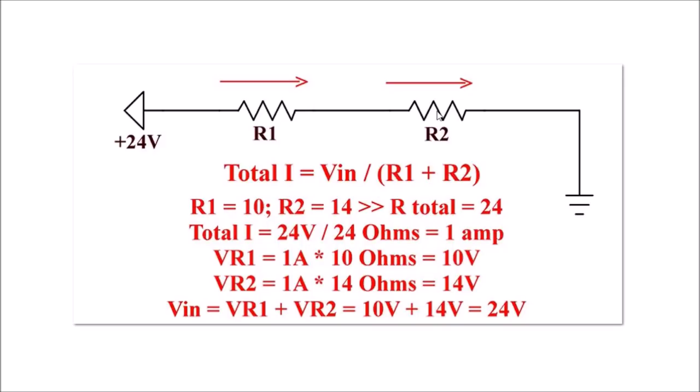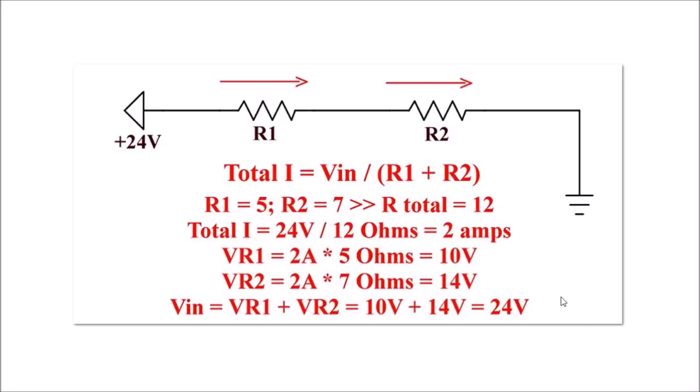What's the voltage across each resistor? This divides according to resistance. The voltage across R1 is 1 amp times 10 ohms equals 10 volts. The voltage across R2 is 1 amp times 14 ohms equals 14 volts. If you add the two voltage drops together, 10 plus 14 volts, it always equals back to the voltage in.